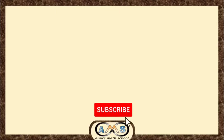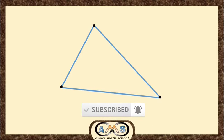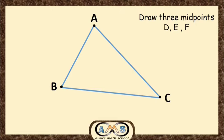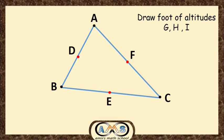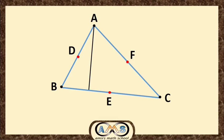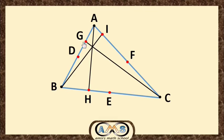Now let's learn the drawing of the 9-point circle. This is our given triangle ABC. To draw a 9-point circle, we need to draw the midpoints of the three sides — that is, draw three midpoints D, E, and F. These are the midpoints of the three sides of triangle ABC. Now draw the foot of the altitudes: draw a perpendicular from A to BC, from C to AB, and from B to AC. G, H, and I are the feet of the perpendiculars. So we already have six points.